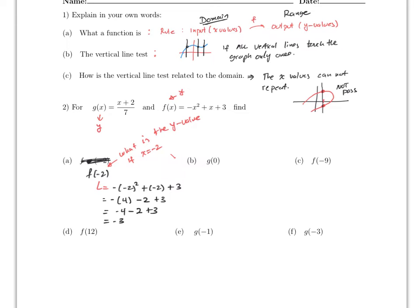For g of zero, it will be zero plus two over seven, which is just two over seven — it doesn't have to be a whole number. For f of minus nine, this will be minus (minus nine) squared plus (minus nine) plus three, so it will be minus 81 minus nine plus three. That part gives minus 90 plus three, which is minus 87.